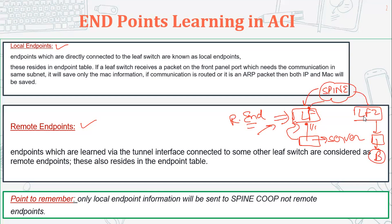For local endpoints, when traffic hits the front panel ports of a leaf switch, it can learn the MAC address or IP address. If the operation is Layer 2 — meaning devices are communicating within the same subnet — it will learn only the MAC address. If it is routed traffic, the leaf switch will learn the IP address. For routed traffic or ARP packets, it will learn both IP and MAC address information.